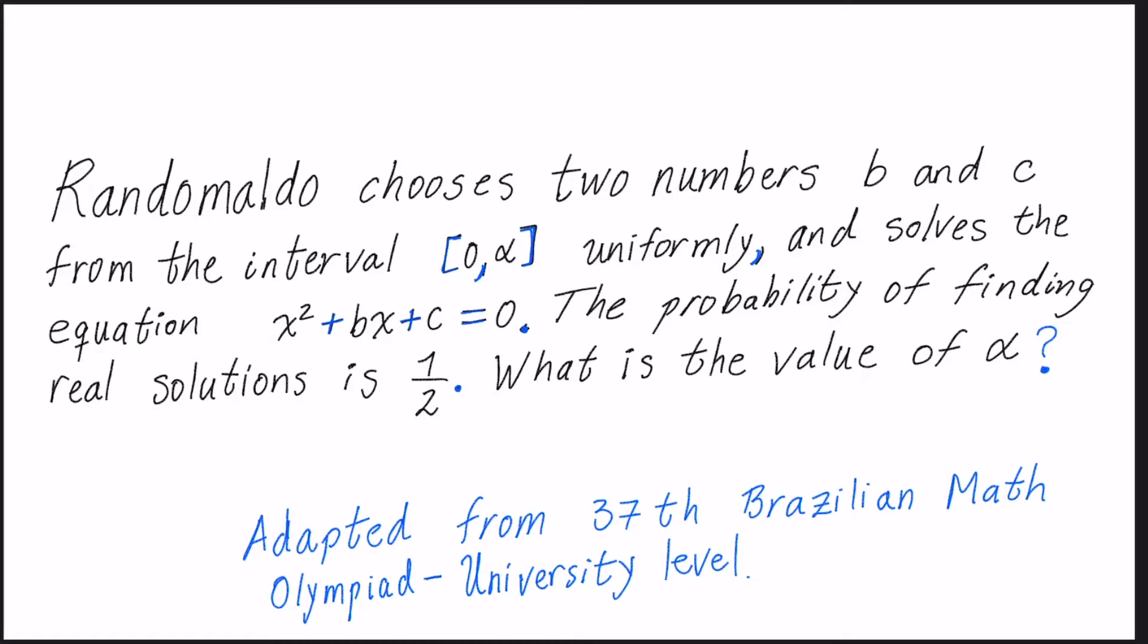So what is the problem? The problem is we have Randomaldo, our character, who chooses two numbers b and c from the interval 0 to alpha uniformly. Also, we have to consider that the numbers b and c are taken from 0 to alpha independently.